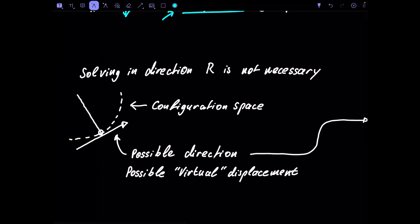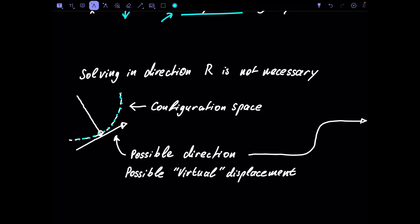Our pendulum can take certain configurations, and all those possible configurations are part of the configuration space — describing where and how our pendulum might be at any given point in time. We know the pendulum moves along a circle, and it can only move tangentially to that circle, never in the radial direction.